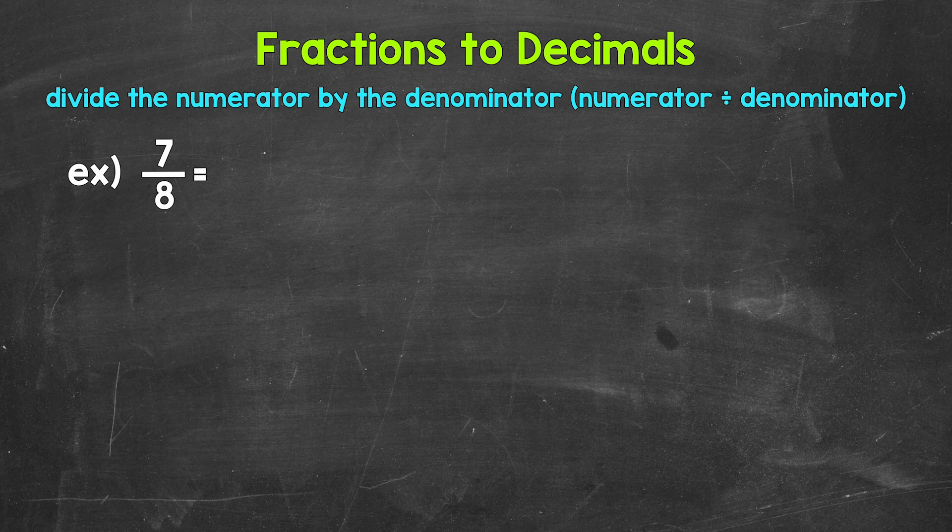Now when we convert a fraction to a decimal, we can do this by dividing the numerator, the top number of the fraction, by the denominator, the bottom number of the fraction.